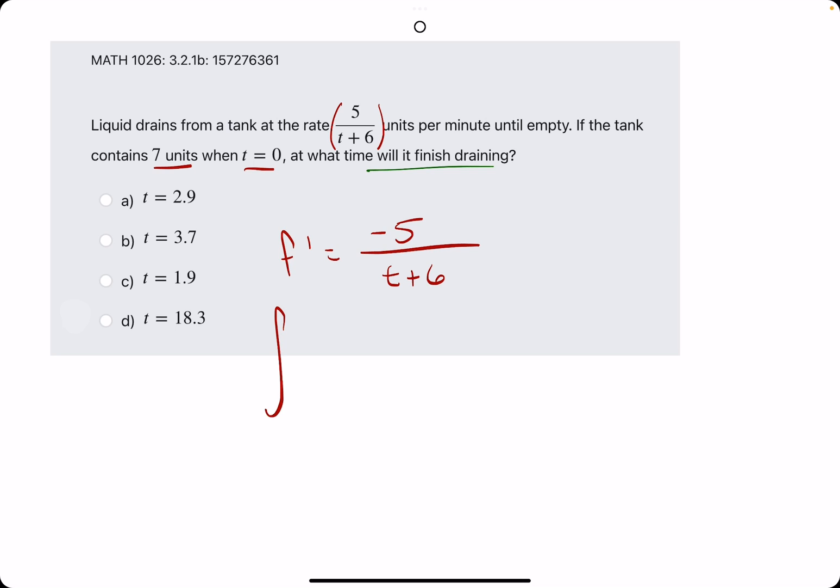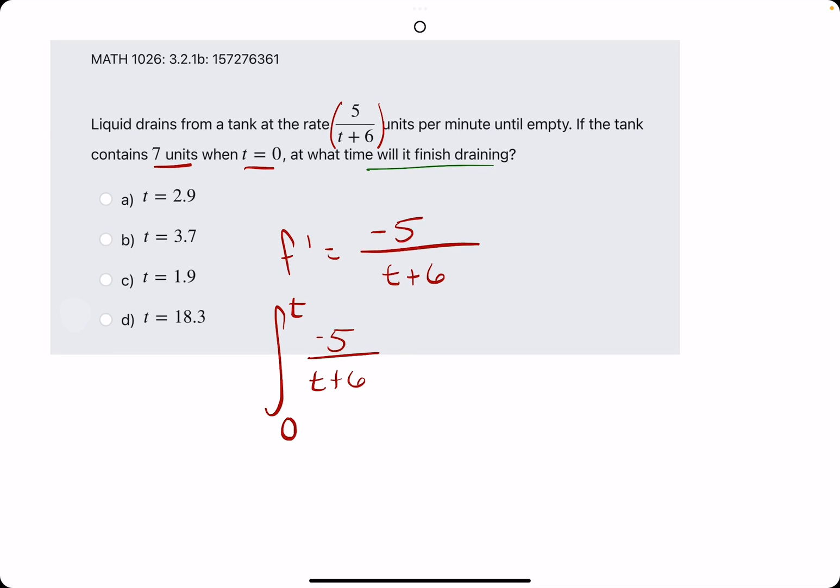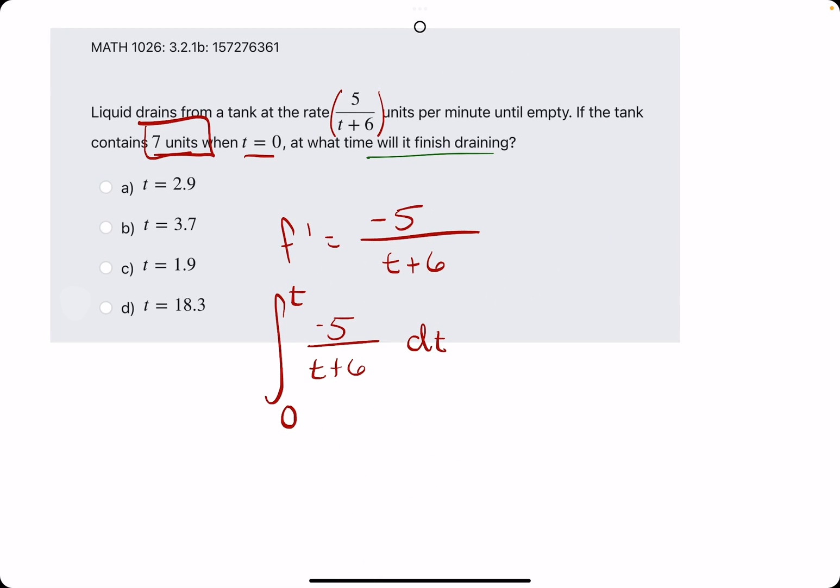We'll really take the integral of this from time zero to some arbitrary time t, dt. We'll start with that and we'll have to incorporate the seven units when we finish working out the integral here. Let's jump to it, finding the anti-derivative of negative five over t plus six first.